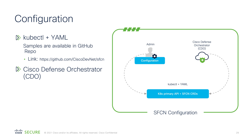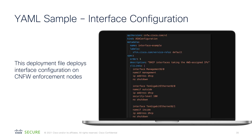The first way is using kubectl and YAML. There is a GitHub link I have added on this slide, and I will paste it in the video description as well. You can go to our GitHub repository, check our sample YAML files, and use those to configure your devices. You can also onboard your devices on Cisco Defense Orchestrator and use the UI to configure your SFCN cluster.